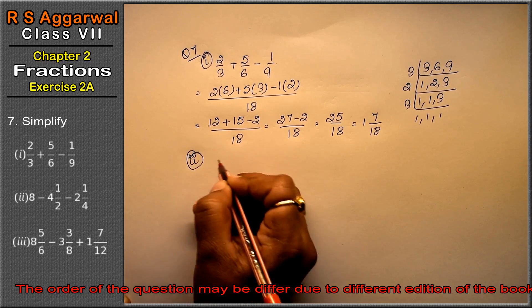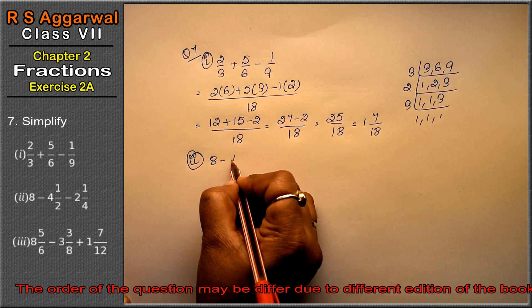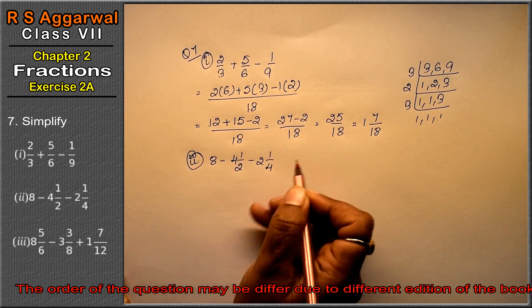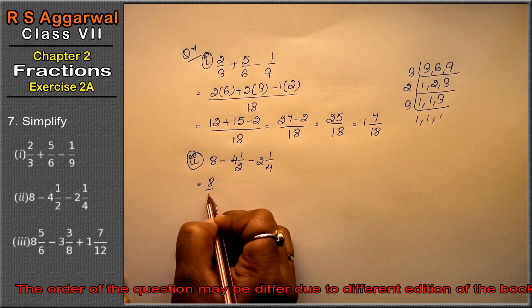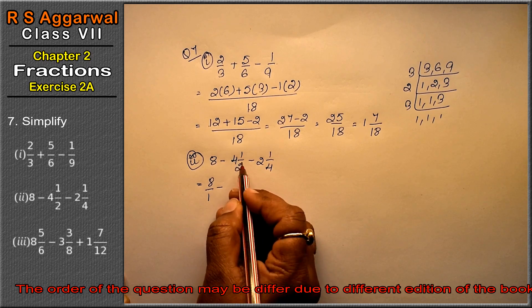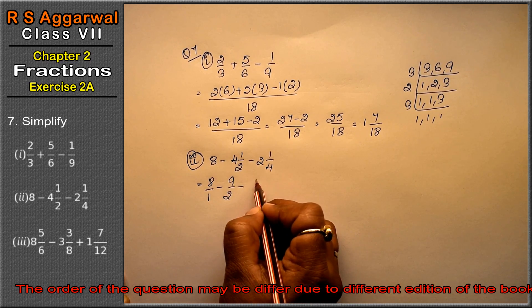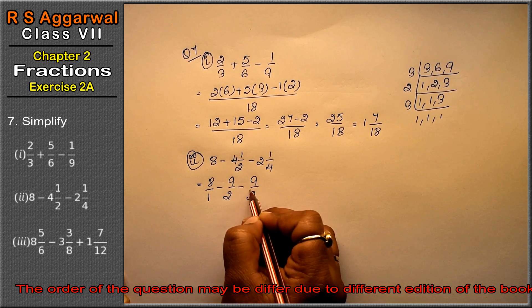Let's do second part. Second part is 8 minus 4 whole 1 upon 2 minus 2 whole 1 upon 4. 8 ke niche kuch nahi hai, 1 laga diya minus. 4, 2 is 8 plus 1, 9 upon 2 minus 2, 4 is 8 plus 1, 9 upon 4.